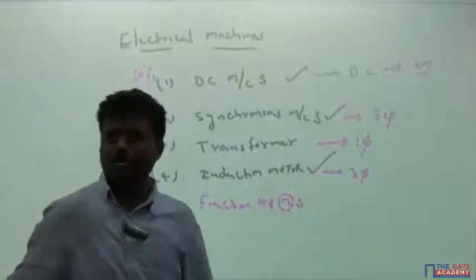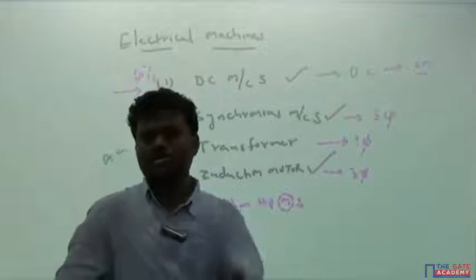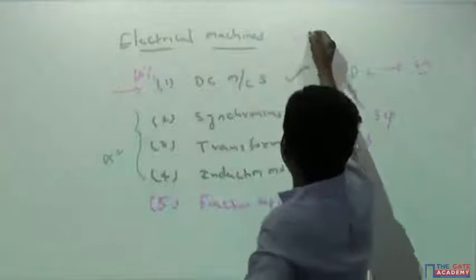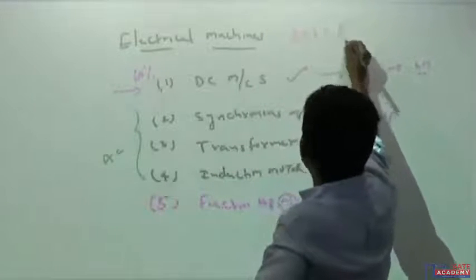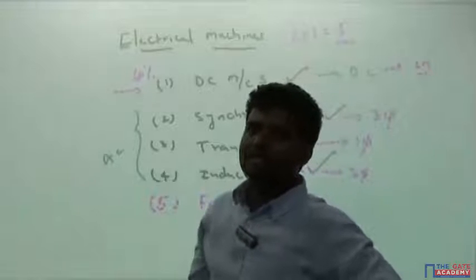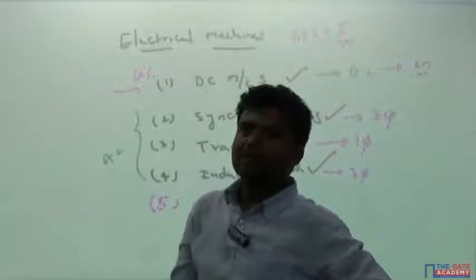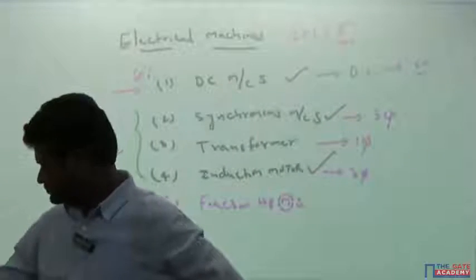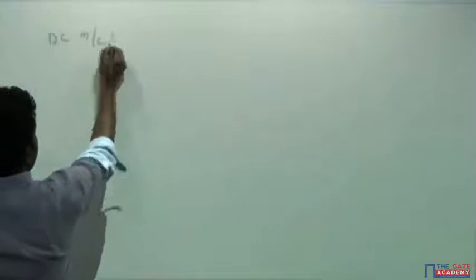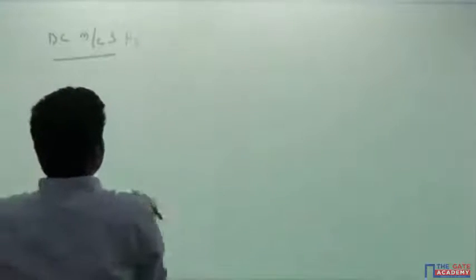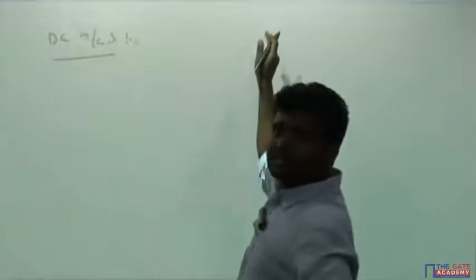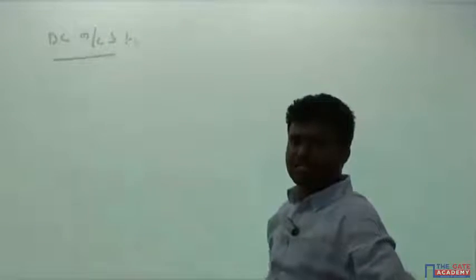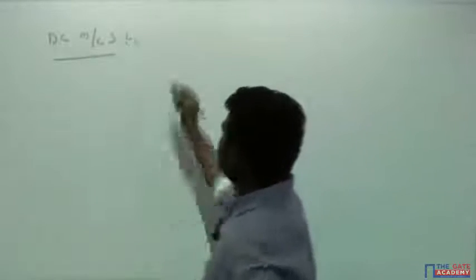If you have any doubt, you can ask me anything — even something as simple as how two plus three equals five. I can explain it in detail. We will go in depth through the subject. Under DC machines, just as synchronous machines consist of a generator and a motor, here we will have a DC generator and a DC motor.